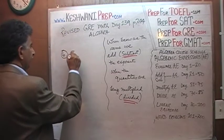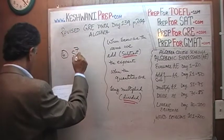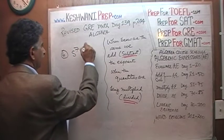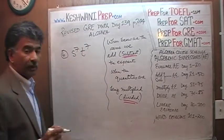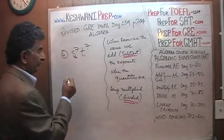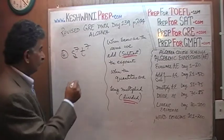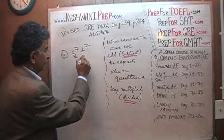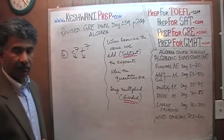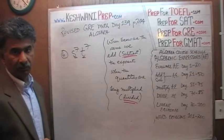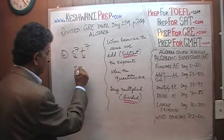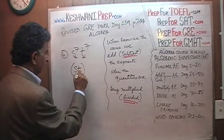Part B says s raised to 7 times t raised to 7. Now the bases are not the same — this quantity has a base of s, this quantity has a base of t. Since the bases are different, there's nothing we can do here. It just stays like that — it is simply s times t, the whole thing raised to 7.